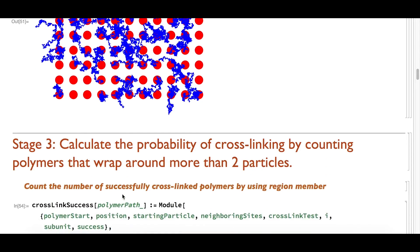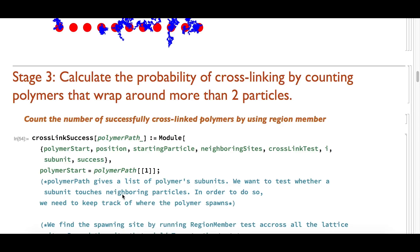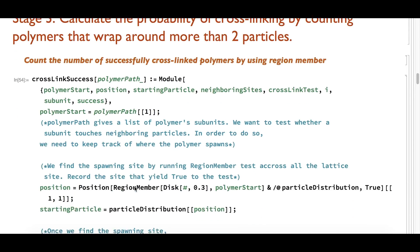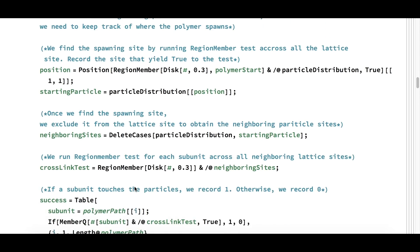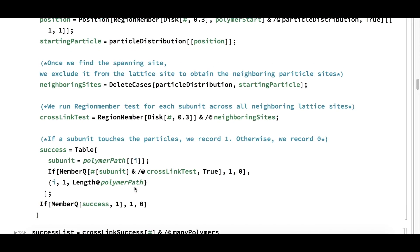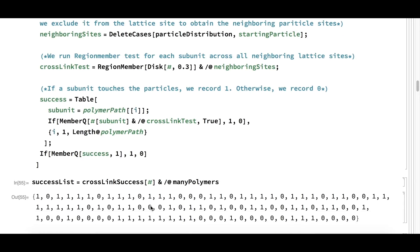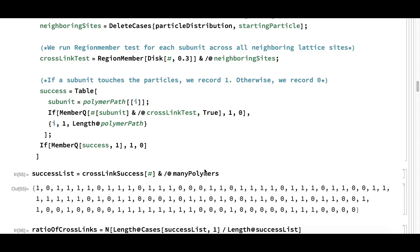In stage 3, we want to calculate the probability of crossover between nanoparticles and polymers by counting how many polymers wrap around more than two particles. We write a function, CrossLinkSuccess, which tests whether each subunit of the polymer would touch a neighboring particle by using RegionMember. If there is at least a subunit that successfully crossed a particle, the polymer connects two or more particles and the function returns 1. If the polymer fails to cross a particle, the function returns 0. We run this function over many polymers using the map function.